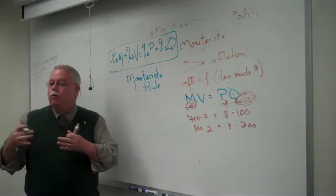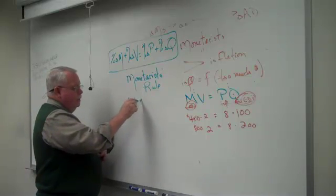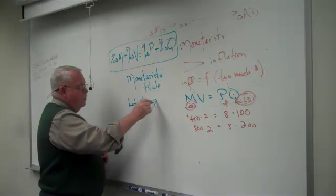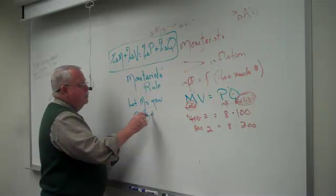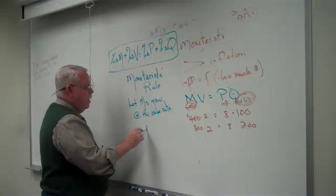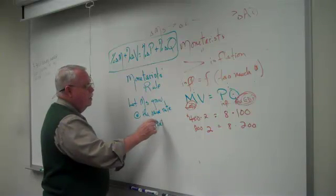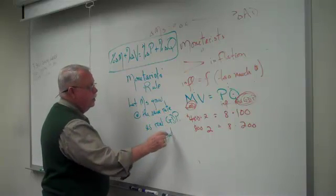In order to avoid inflation, let the money supply grow at the same rate as real GDP or as output, if you like it.